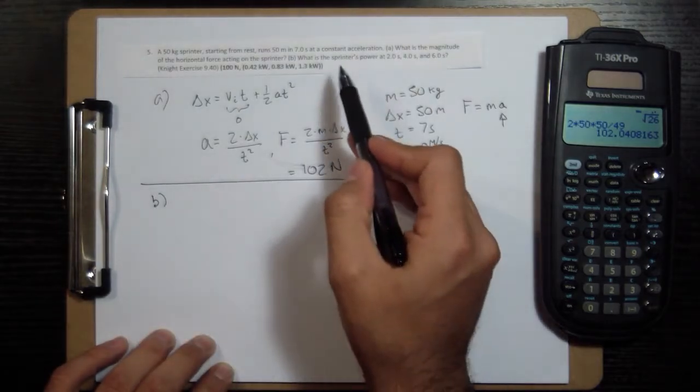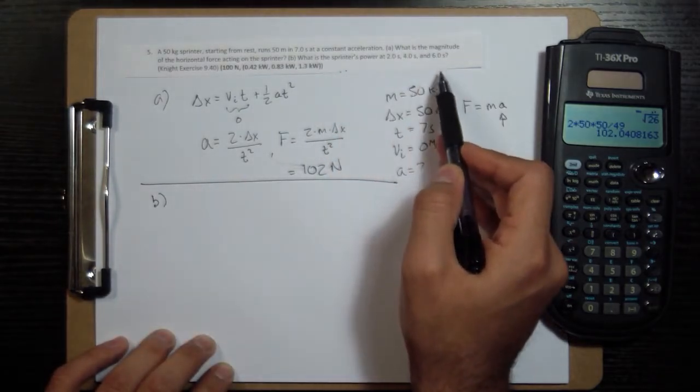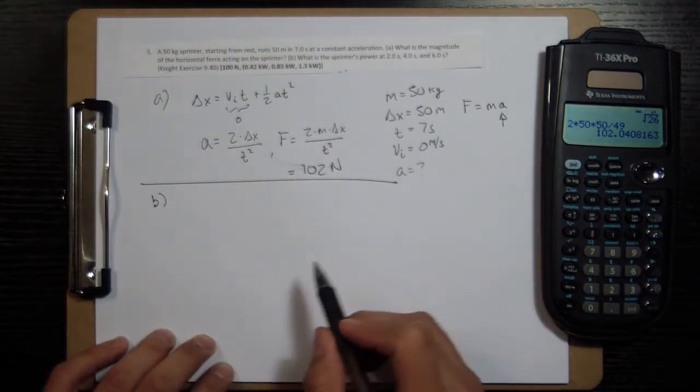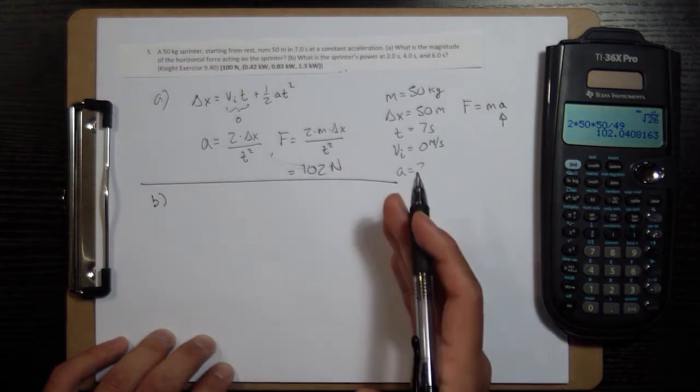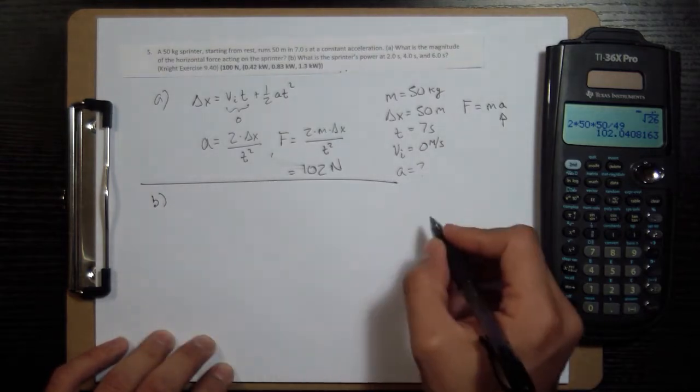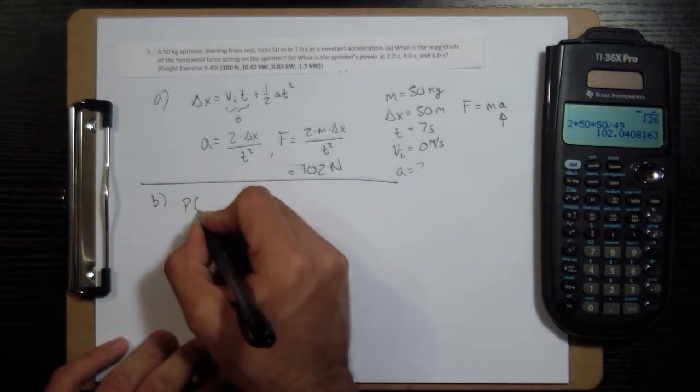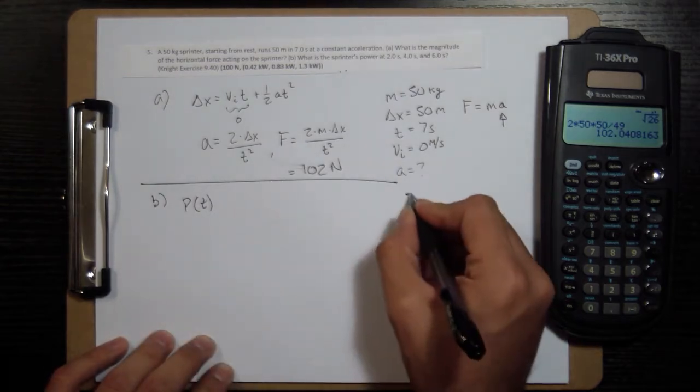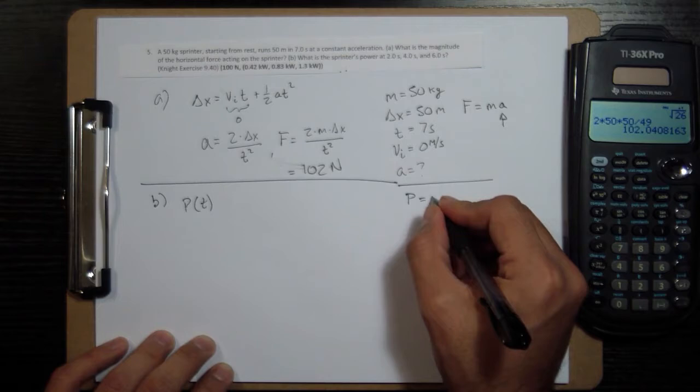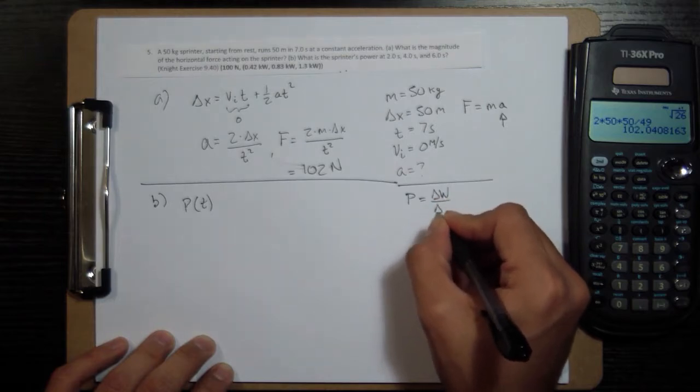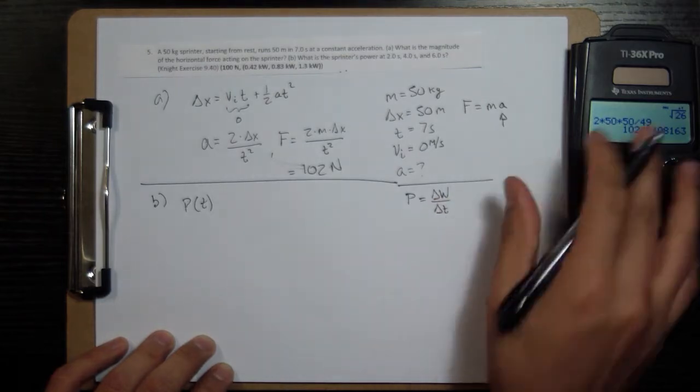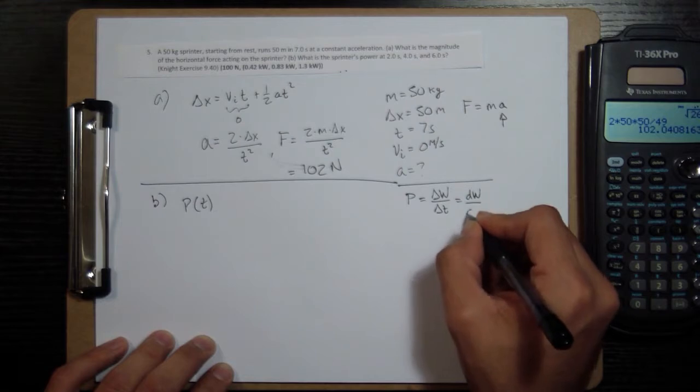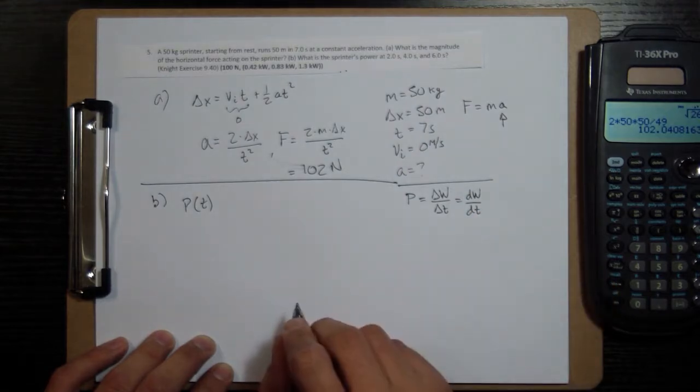To do that, we will have to find an equation that expresses P as a function of time. P for power. Power is a function of time. And then be able to plug it in. So power, if you have a constant force, and it's going to be changing work over changing time, but if things are changing with time, then it's the derivative of work with time. Now, you know the equation for work to be force times distance traveled.